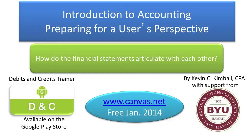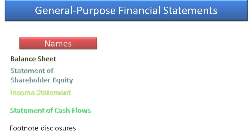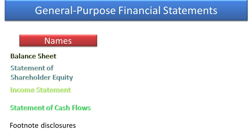Welcome to Introduction to Accounting, Preparing for a User's Perspective. How do the financial statements articulate with each other? You've already been introduced to the general purpose financial statements — there are four of them. There are also footnote disclosures that help describe additional information that's not included on the face of these financial statements.